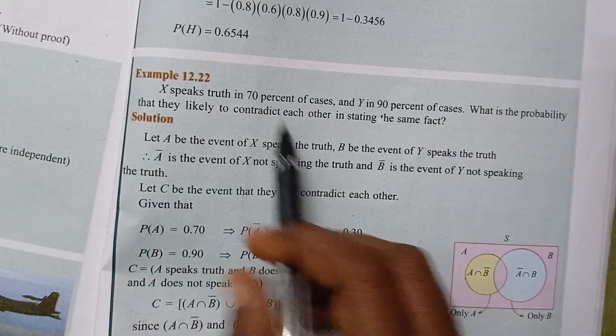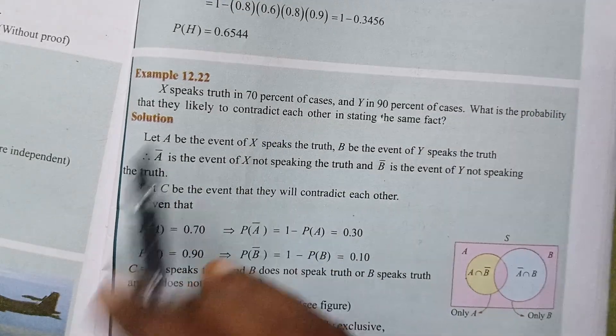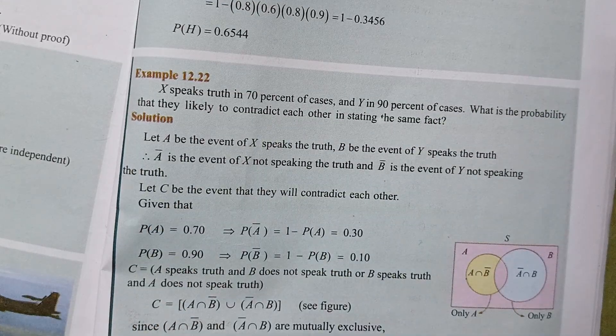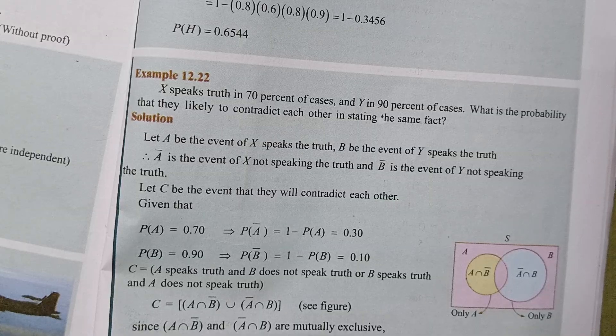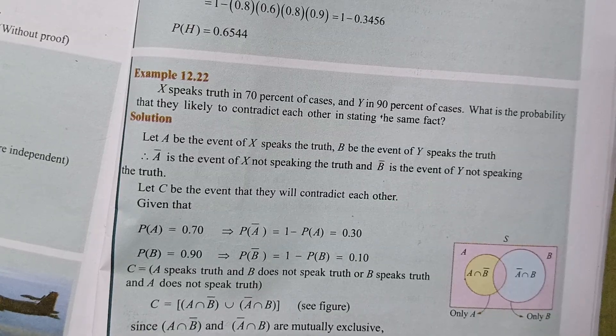What is the probability that X speaks truth? That is 70%. What is the probability that Y speaks truth? That is 90%.